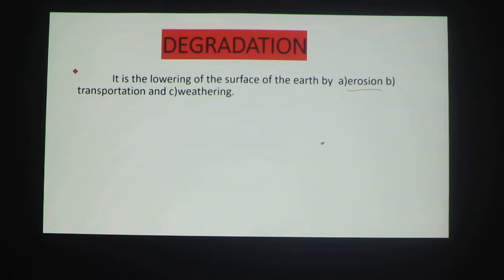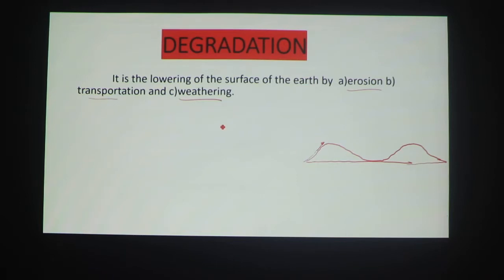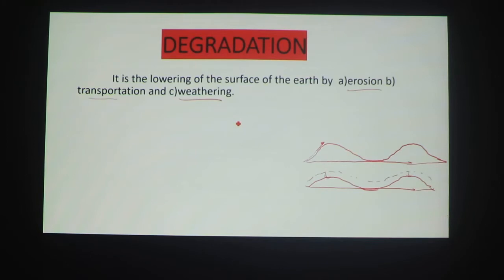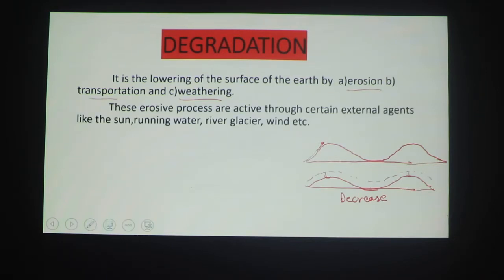It is a combined process acting in two ways — erosion, transportation, and weathering. In simple terms, degradation means height decreases. For example, consider water and ice: where there are elevations, the surface height decreases. These erosic processes are active through certain external agents like sun, running water, river, glacier, wind, etc.